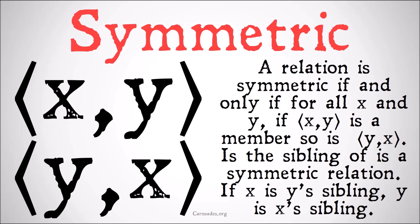A relation is symmetric if and only if for all x and all y, if xy is a member so is yx. 'x is a sibling' is an example of a symmetric relation — if x is y's sibling, then y is x's sibling.